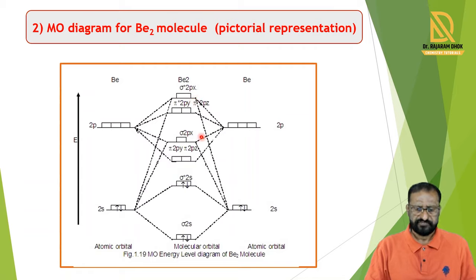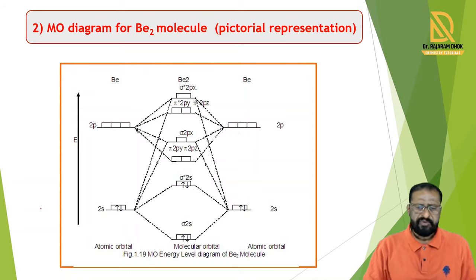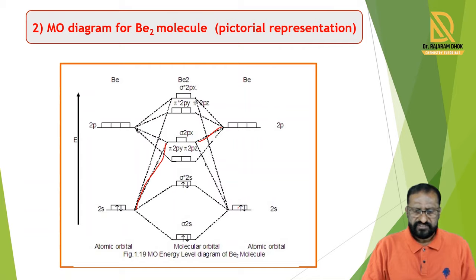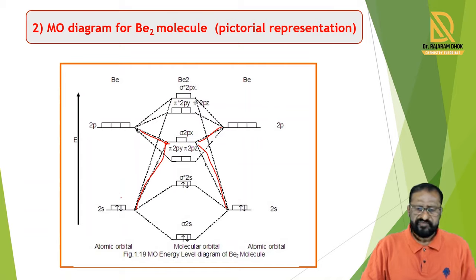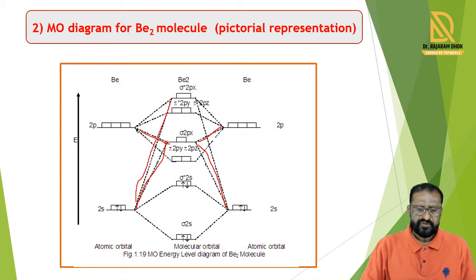Now, the 2s orbital of one beryllium atom and the 2px orbital of the other beryllium atom interact with each other, and by that interaction the sigma 2px molecular orbital is formed. We show this interaction with lines in the diagram. Similarly, the second atom's 2s and the first atom's 2px combine and also form sigma 2px. The 2s atomic orbital of the first beryllium and the 2px atomic orbital of the second beryllium form the sigma* 2px anti-bonding orbital, also shown with lines in the diagram. This is the complete diagram for the beryllium molecule.